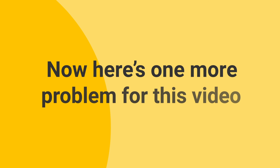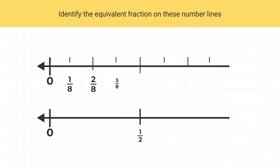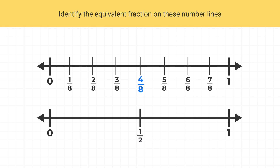Now here's one more problem for this video. Identify the equivalent fractions on these number lines. If we look at four eighths, we can see it's in the same place as one half. So four eighths is equivalent to one half, and that's the only equivalent fraction on these number lines.